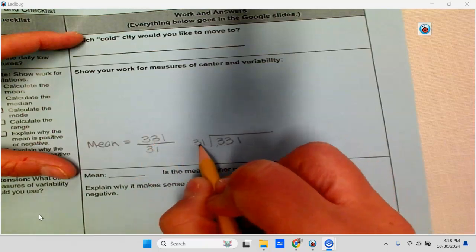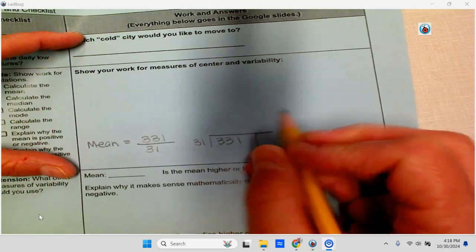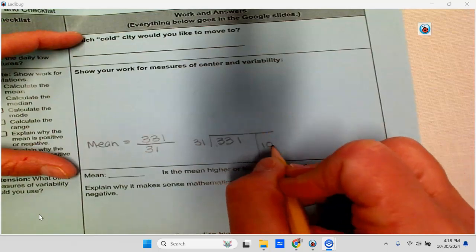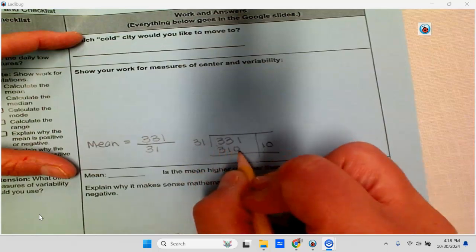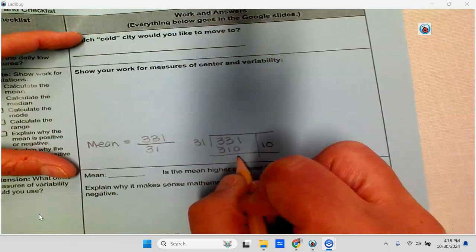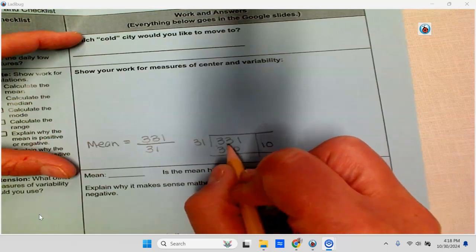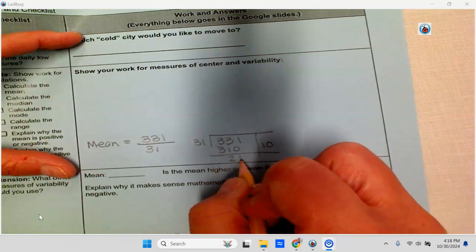If I take 31 and multiply it by 10, 10 times 31 is 310. When I subtract 10—when I subtract 10 31s from 331—I get 21 left over.